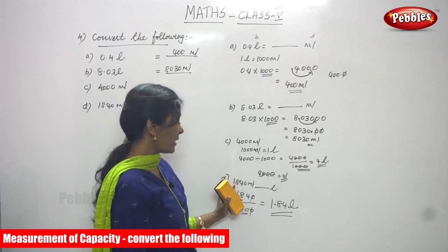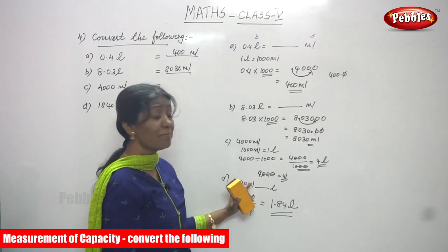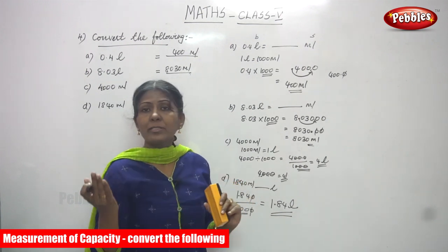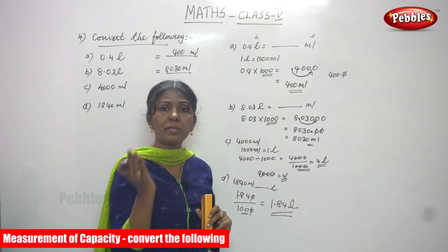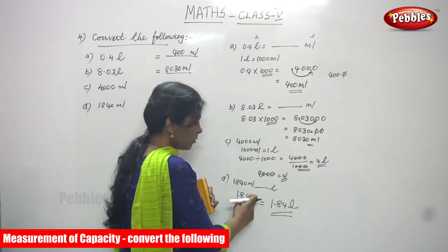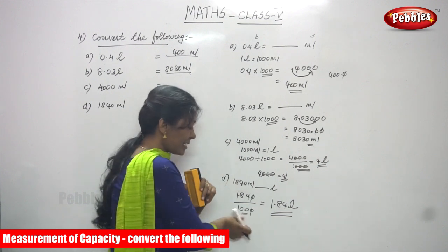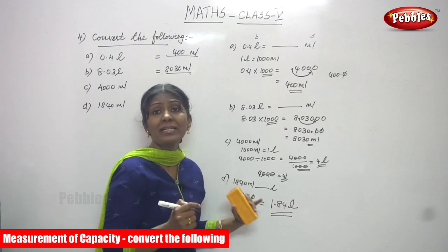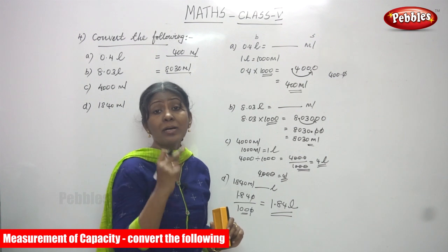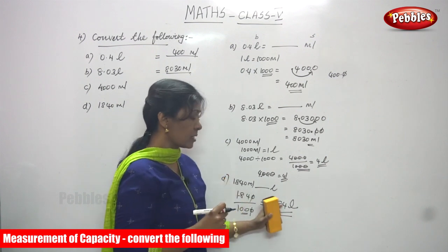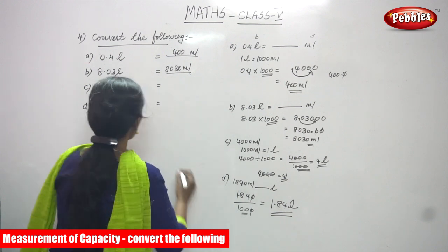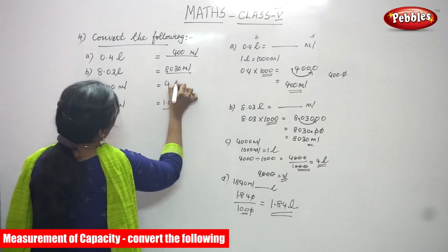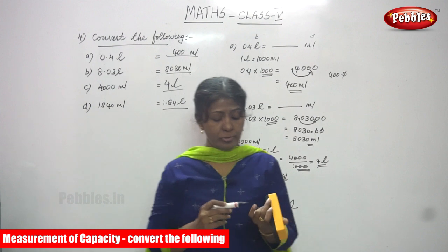To repeat: 1840 milliliters converted to liters — milliliter to liter means divide by 1000. If you consider all three zeros, move three decimal places to the left. But since you can cancel one zero from 1840, only two zeros remain in 100, so move two decimal places to the left. The answer is 1.84 liters. Fill in your answers and don't forget the units.